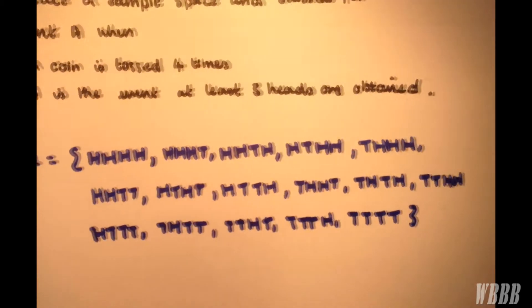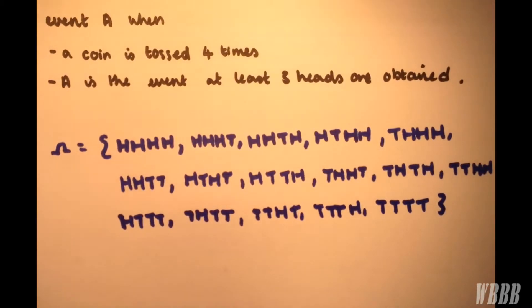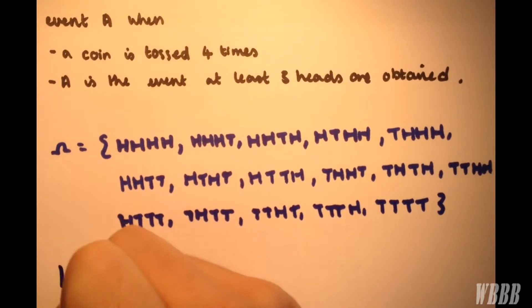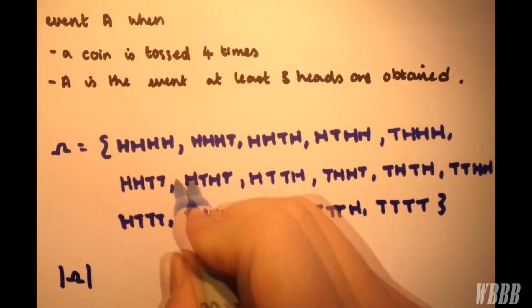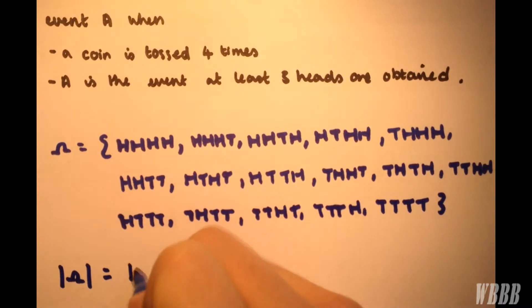So here is our sample space omega, and you'll notice that the order or cardinality of this set, which is the number of elements within it, is equal to 16, which is also equal to 2 raised to the power of 4.